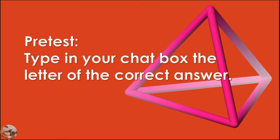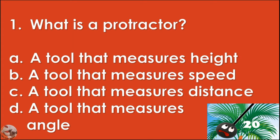Type in your chat box the letter of the correct answer. For each number you have 20 seconds. Let's start. Number 1: What is a protractor? Your 20 seconds starts now.